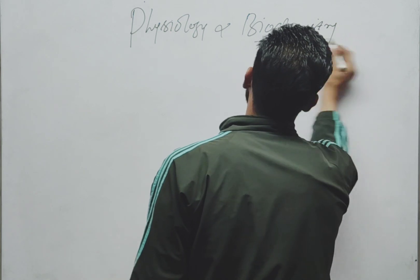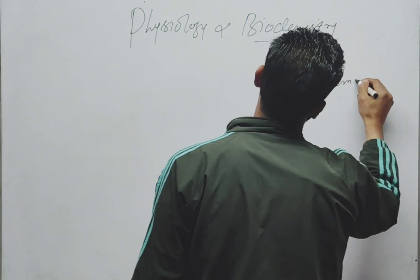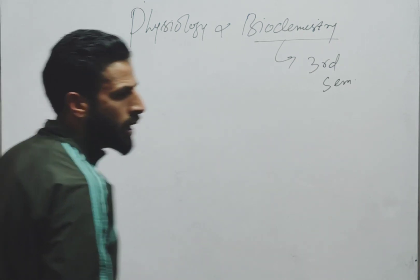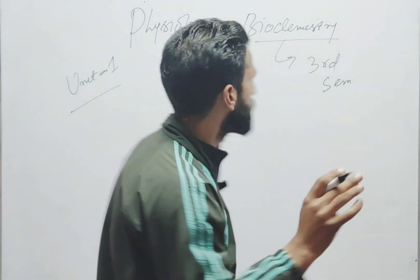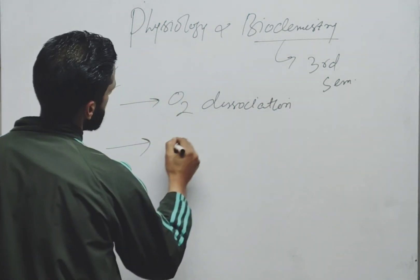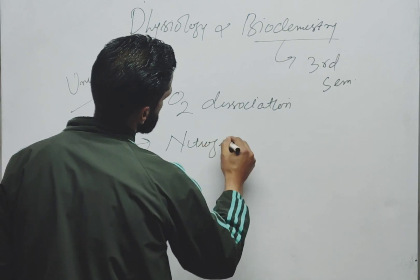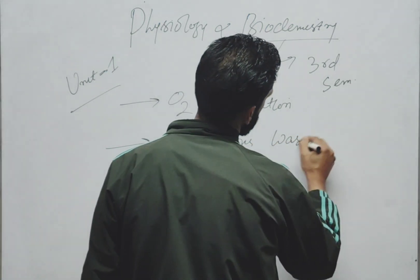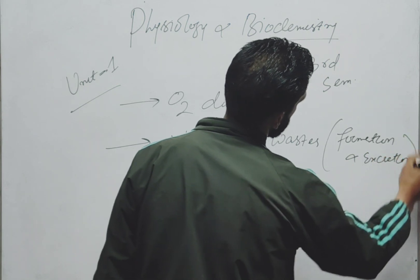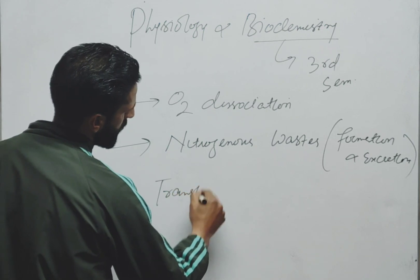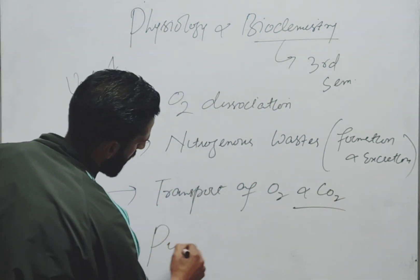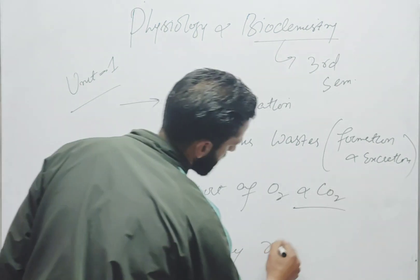We have chosen important questions from each unit. In Unit 1, the important questions include O2 dissociation curves — what are O2 dissociation curves. Also covered: formation and excretion of nitrogenous wastes — how nitrogenous wastes are formed and excreted. Transport of O2 and CO2 is also important. Pulmonary respiration will appear as a short question.